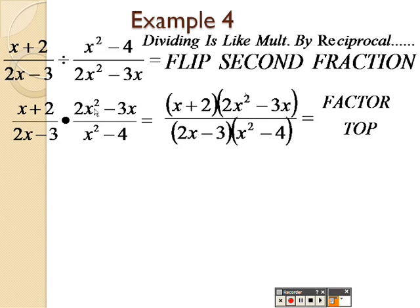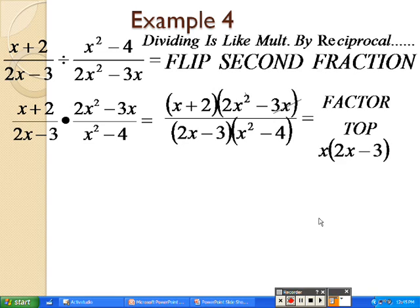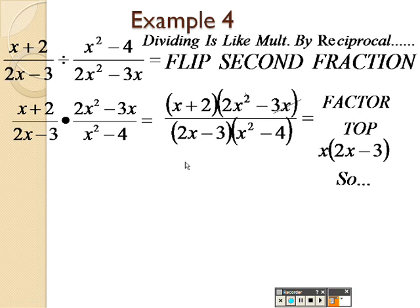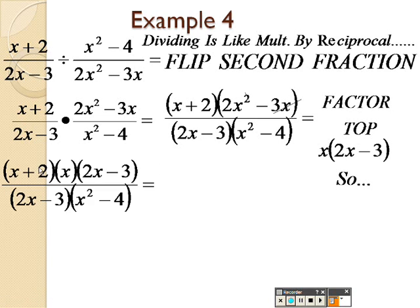To factor the rest of that top, I'm going to take an x out of both those. Take an x out of both those. And I'm left with an x times 2x minus 3. And I also have that x plus 2 there on top. So, there's my top.